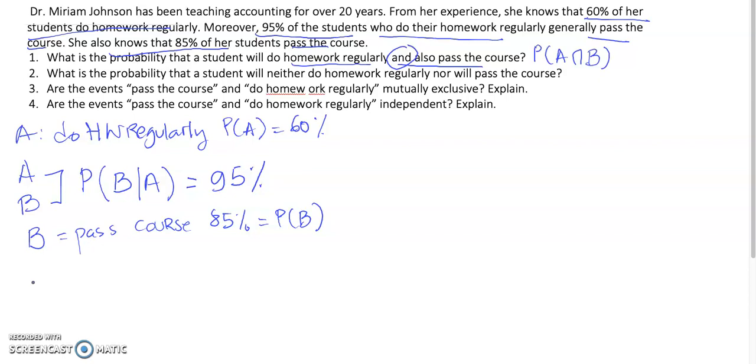Remember, for joint probability, we use the multiplication rule, P(A and B) equals to P(A) times P(B|A). And fortunately, from the problem, we have the information to solve for part A. So,